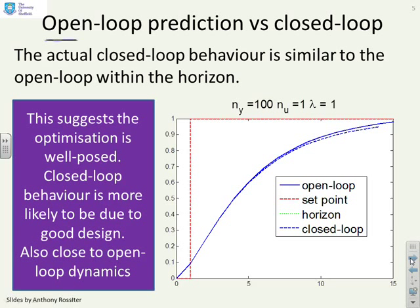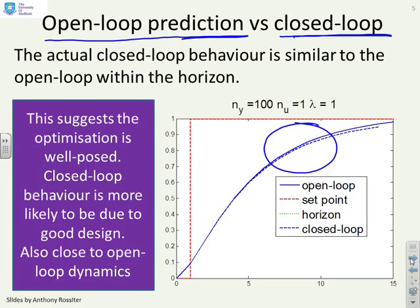Now let's compare the open loop predictions with the closed loop behavior that results. And here you notice they are actually quite similar. And now I'm feeling a lot more confident. You'll remember in the previous video when the output horizon was small these curves were very different suggesting the optimization was meaningless. Here the curves are nearly the same and that suggests that the optimization is actually well posed. The closed loop behavior is more likely now to be due to good design because the optimized predictions are actually overlaying the closed loop behavior that results.